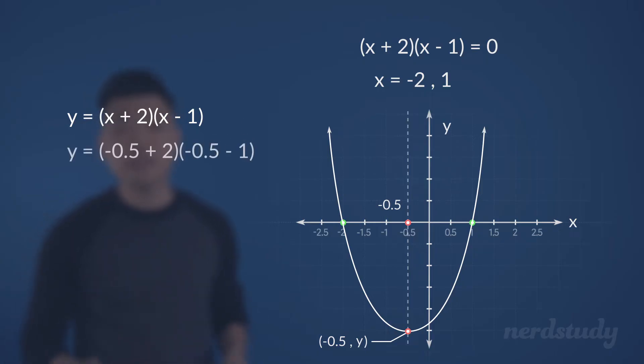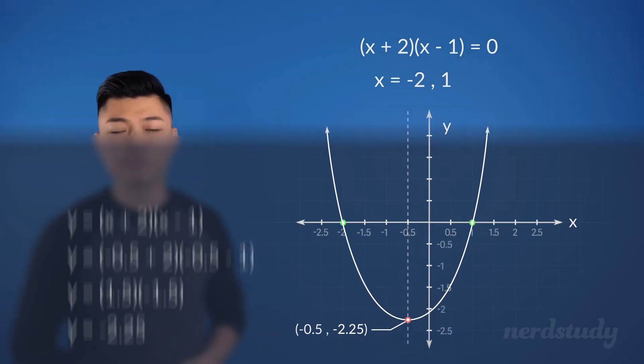So, when we plug in negative 0.5, we get this, which equals negative 2.25, making our vertex equal to negative 0.5, negative 2.25. And now, we can sketch our graph more accurately. Awesome!